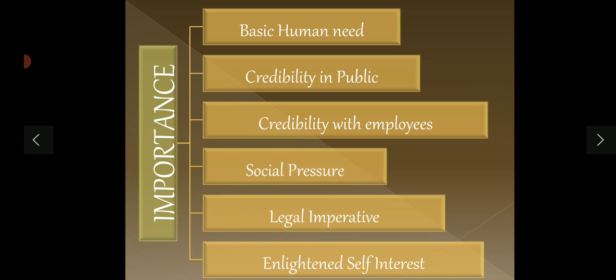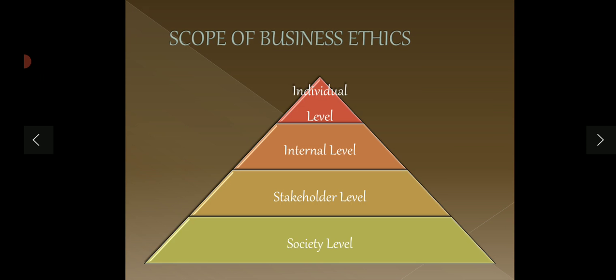Number four: social pressure. Today's society is very enlightened; there are many social groups that keep watch on whether businesses are following ethical practices. They will always pressurize you, whether the government does or not. Number five: legal imperative — of course, the government has made many laws that cover unethical practices. And lastly: enlightened self-interest — ultimately, following ethics is beneficial for the businesses themselves. It is in their own self-interest to follow business ethics.